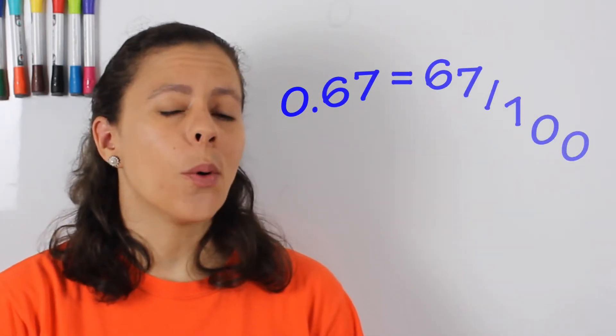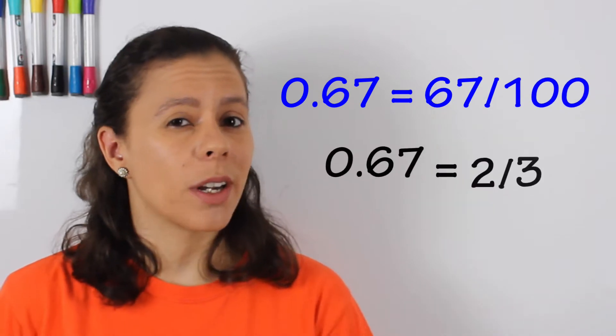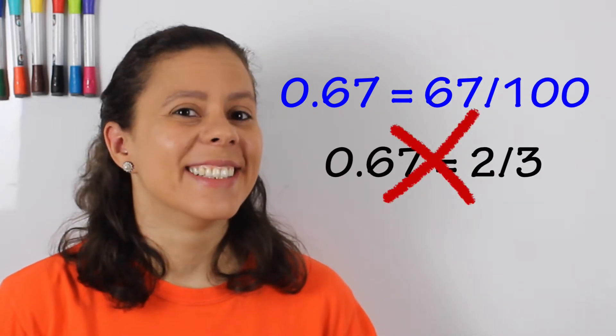Hi there. Welcome to Isabelle Explains. In this video, I will show you why .67 is 67 over 100 and not two-thirds. Let's go.